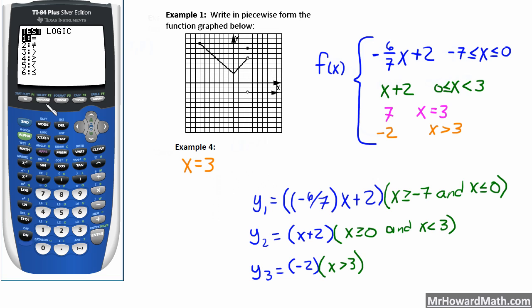So greater than or equal to 0 and x, second math, less than, option 5 for less than, x less than 3, close parenthesis. Graph it, and it should put that little section in right here.